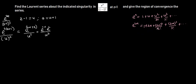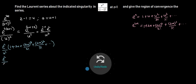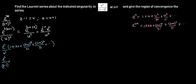So let's substitute this now. We are going to have exponential 2 divided by u cubed, multiplied by the series: 1 plus 2u plus (2u) squared over 2 factorial plus (2u) cubed over 3 factorial, continuing to infinity. Now let's substitute back our value of u, which was z minus 1.